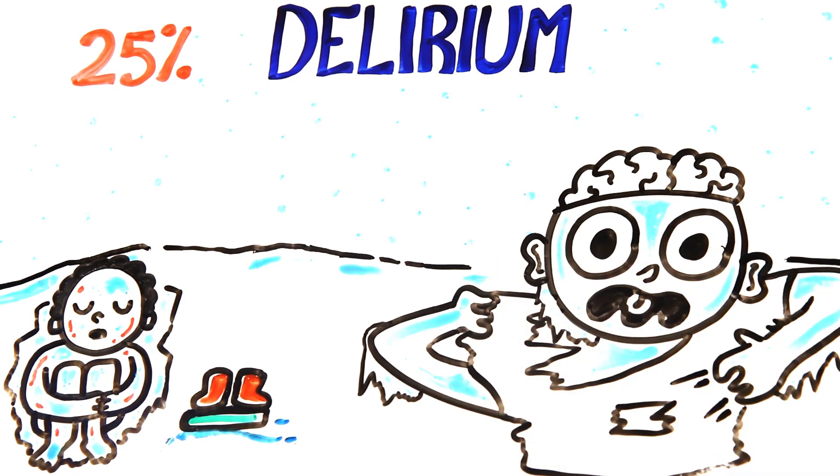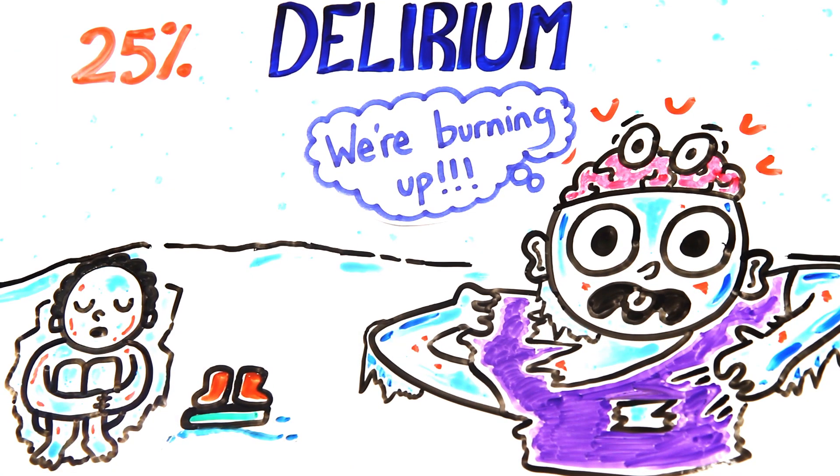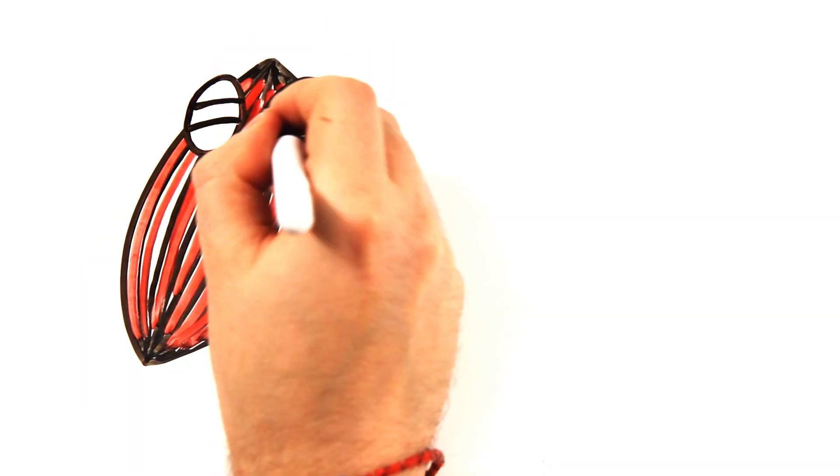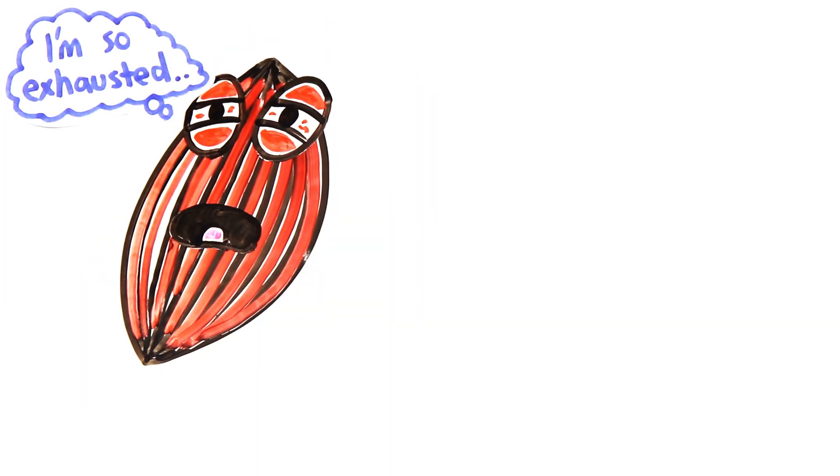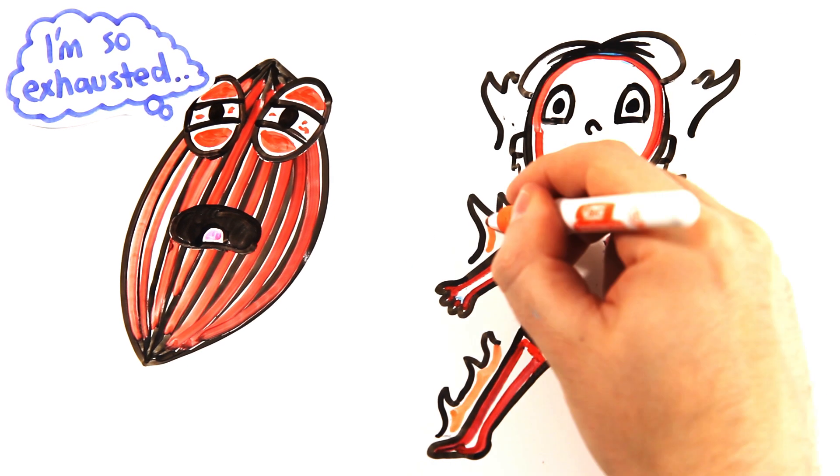One theory is that the brain damage that results from the extreme cold causes people to think that they're burning up, so they strip naked and cool down. Another theory suggests that the muscles that cause cutaneous vasoconstriction in our blood vessels get exhausted and cause blood from our core to rush to the surface of our body, resulting in a hot flash.